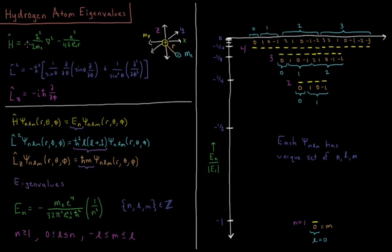Our Hamiltonian operator is the kinetic energy operator plus the potential energy operator, so negative h-bar squared over 2 times mass of electron times Laplacian operator, which is del squared, minus charge of the electron squared over 4 pi epsilon naught times R.